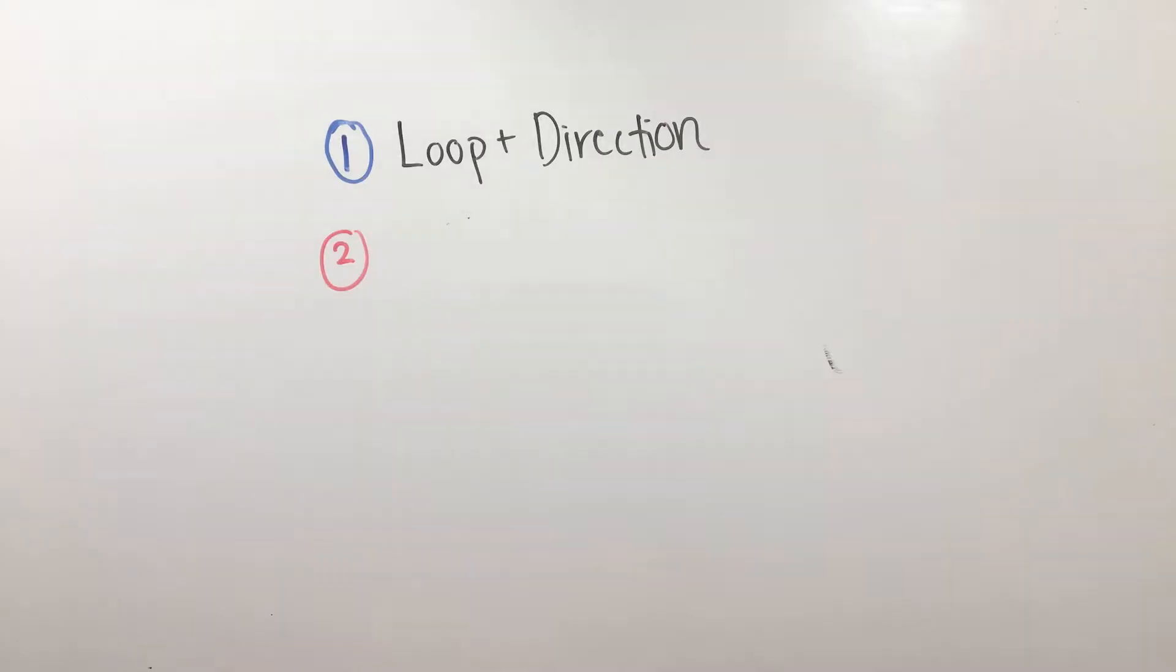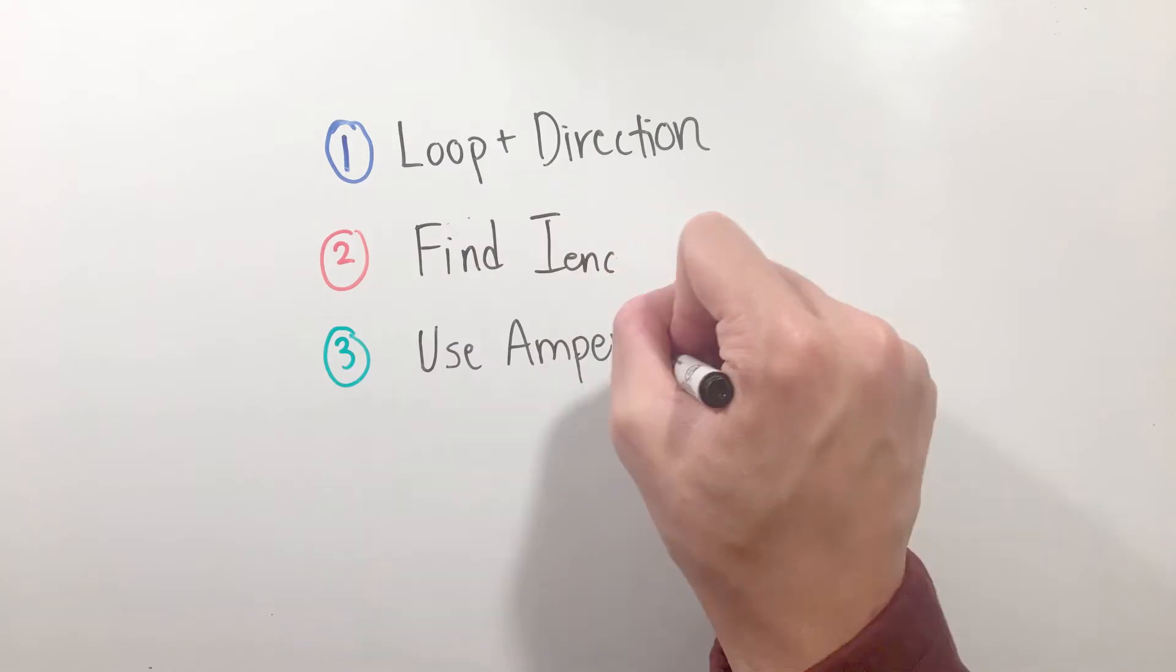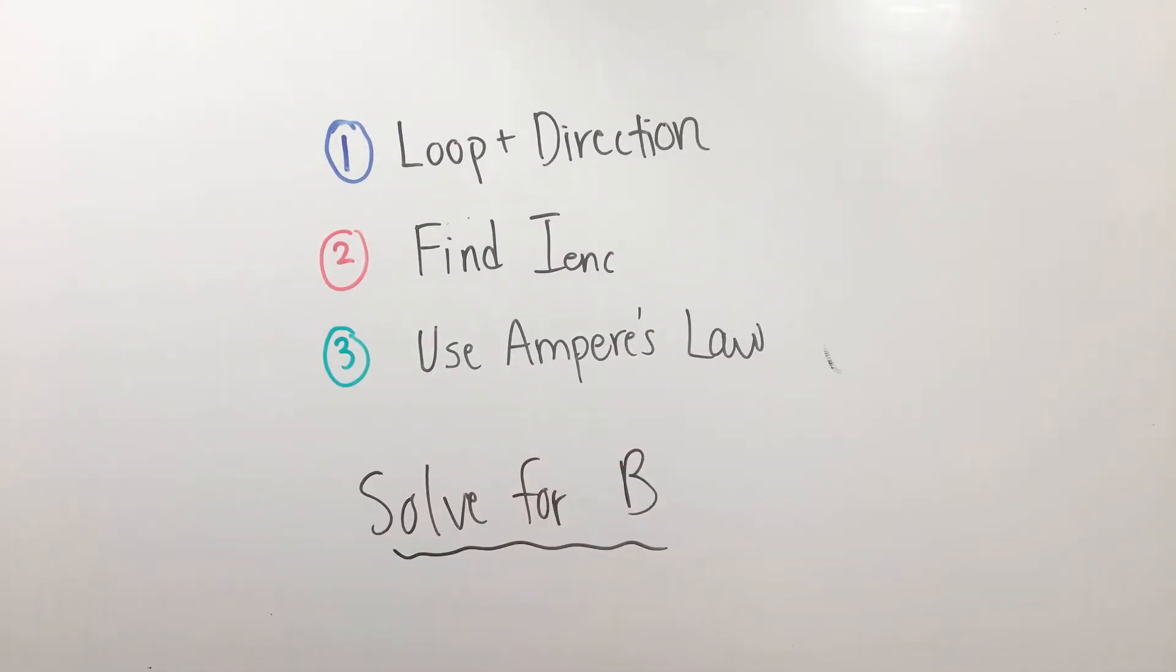Second, calculate the enclosed current using the right-hand rule trick mentioned before. Finally, combine all of your components into the Ampere's Law equation to solve for the magnetic field.